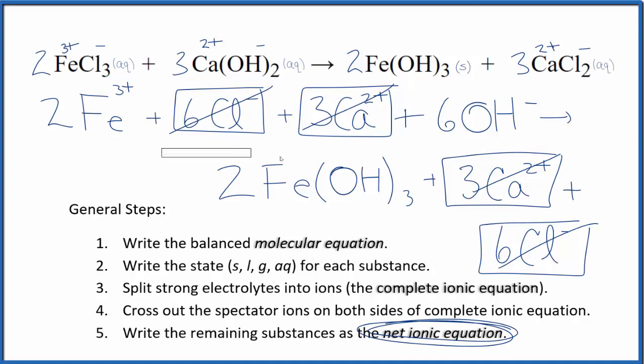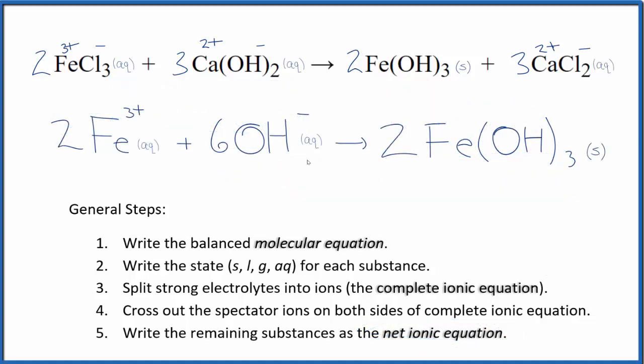I'll clean this up. Write the states. We'll have our net ionic equation. So this is the balanced net ionic equation for iron three chloride plus calcium hydroxide. If you count the atoms up, they're balanced. The charge is balanced too. Two times three plus is six plus. Six times one minus is six minus. That gives us a net charge of zero. This is neutral. Net charge is zero.